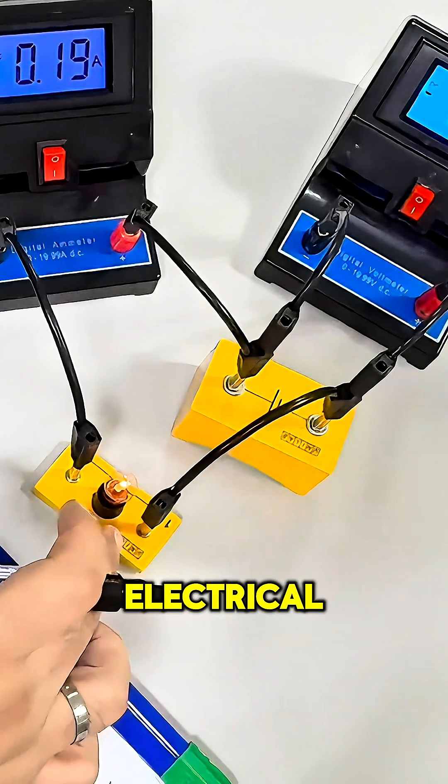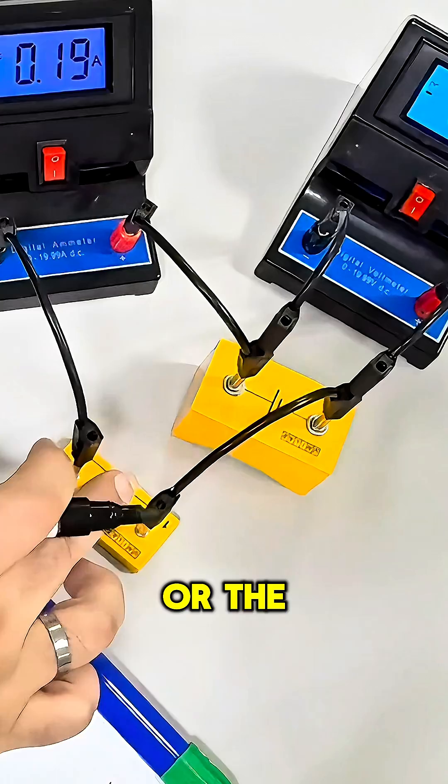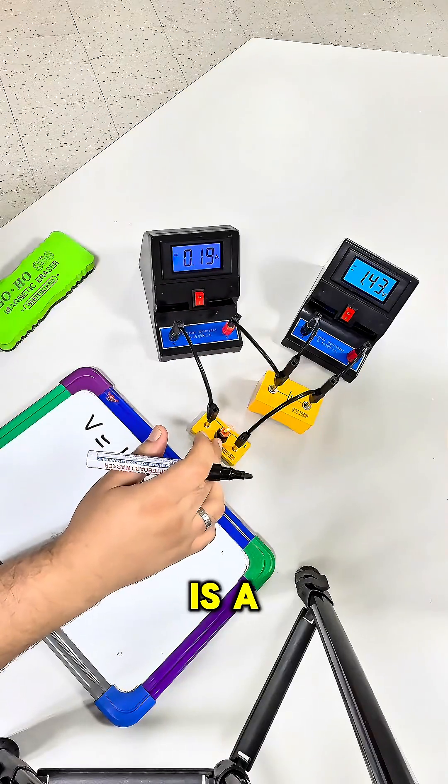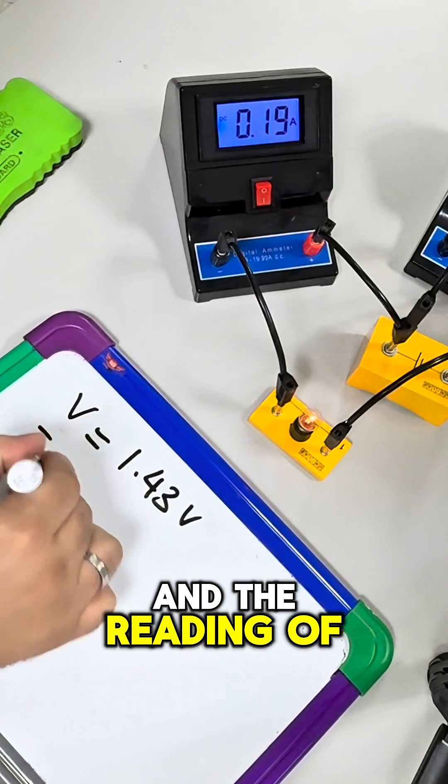The lamp changes the electrical energy into light. If you let the lamp work for a long time, there is heat energy dissipated as well. Overall, we have the voltage and the reading of the current.